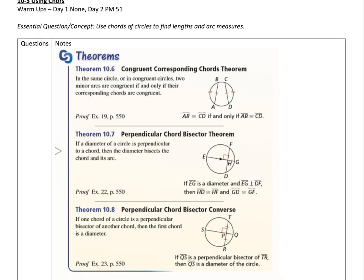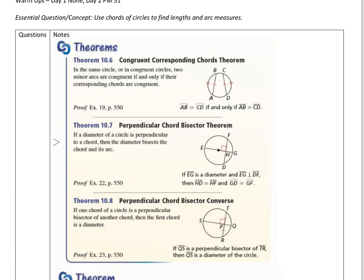The first thing we have is the Corresponding Chords Theorem. Here's basically what it says. If you have a circle, and it could be in the same circle or in congruent circles, the two minor arcs are congruent if and only if their corresponding chords are congruent.